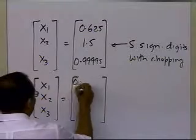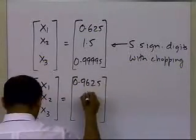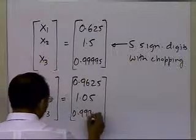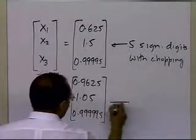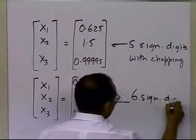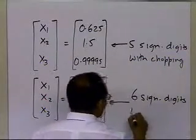you would get 0.9625, 1.05, and 0.999995, and this is the answer which you get with 6 significant digits with chopping.